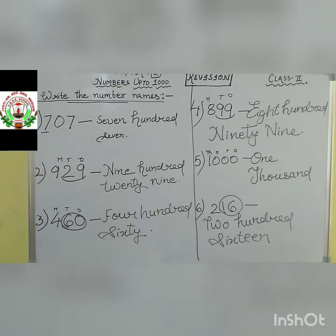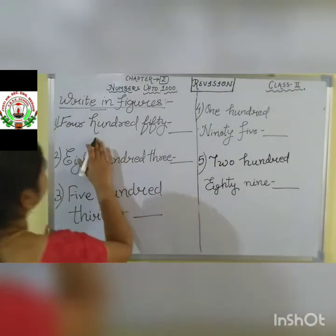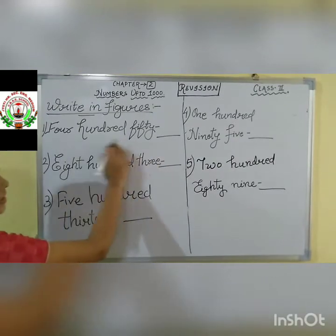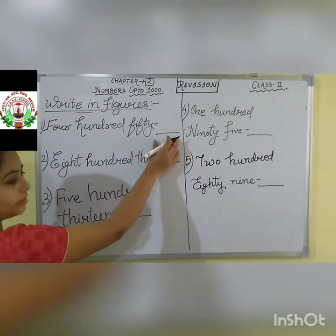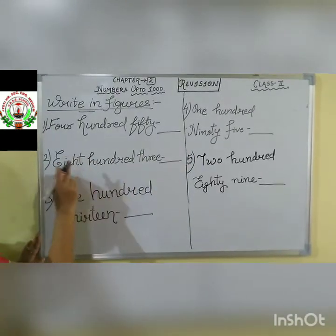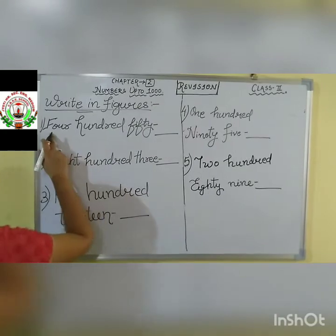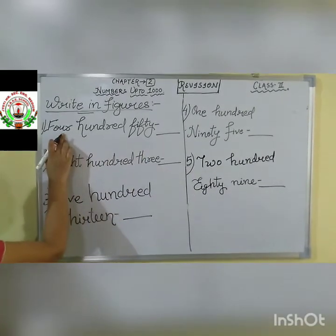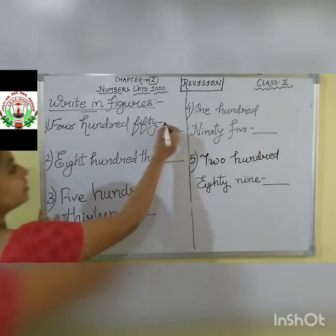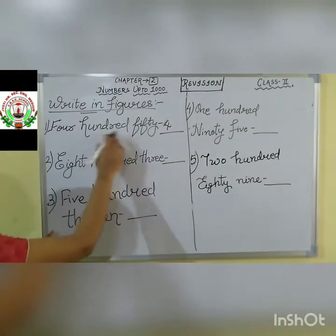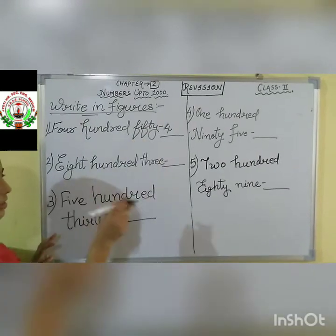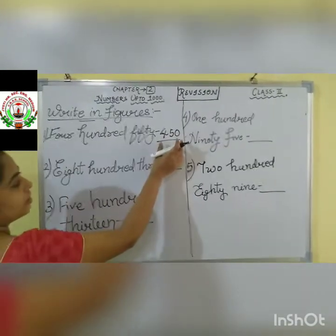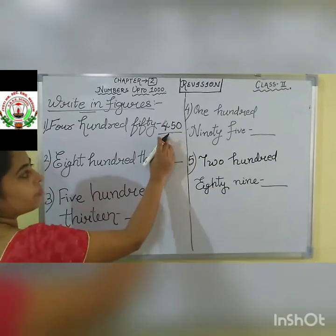So let us see some more questions. Write in figures. That means number names are given as spellings, and we have to write the number. First: four hundred and fifty. See, the first spelling here is four. So write down 4. Then fifty — F-I-F-T-Y — how are you writing? 5-0. So write down 50. Our figure for this number name is 450.